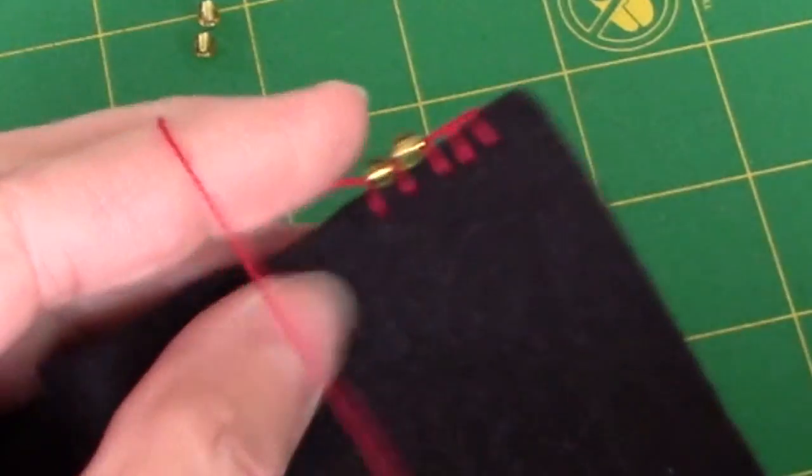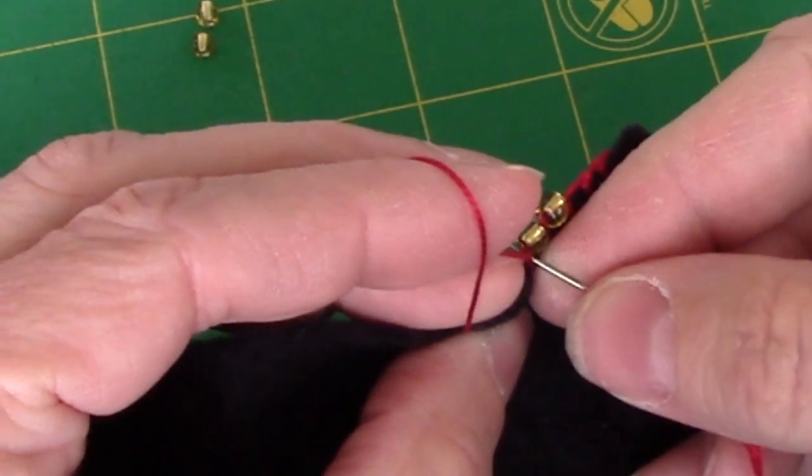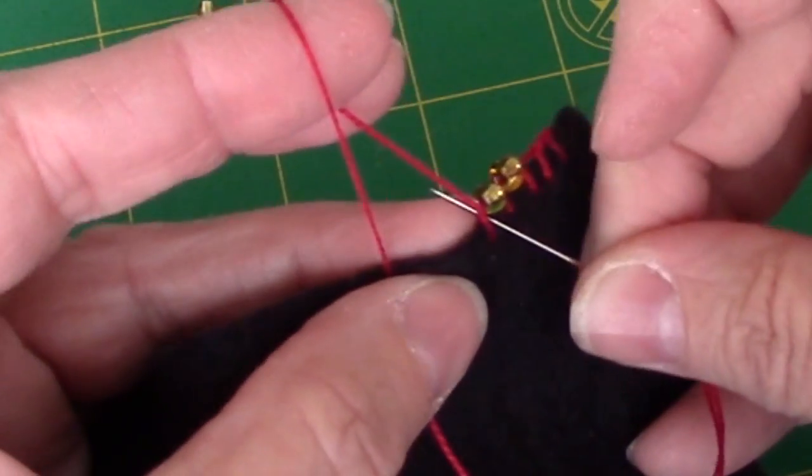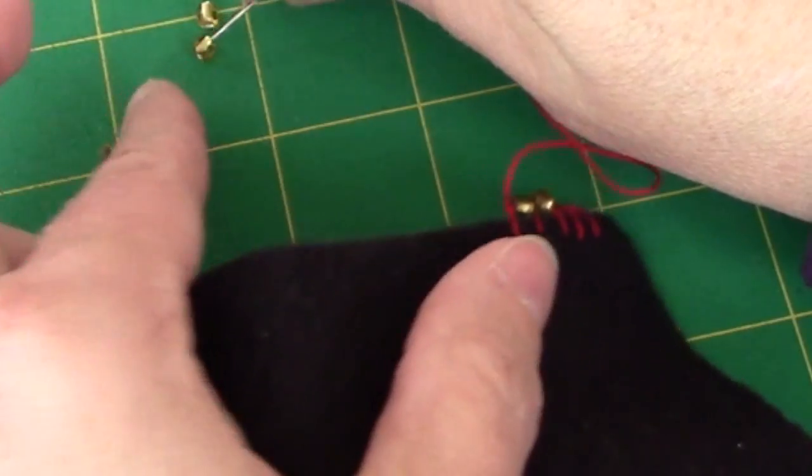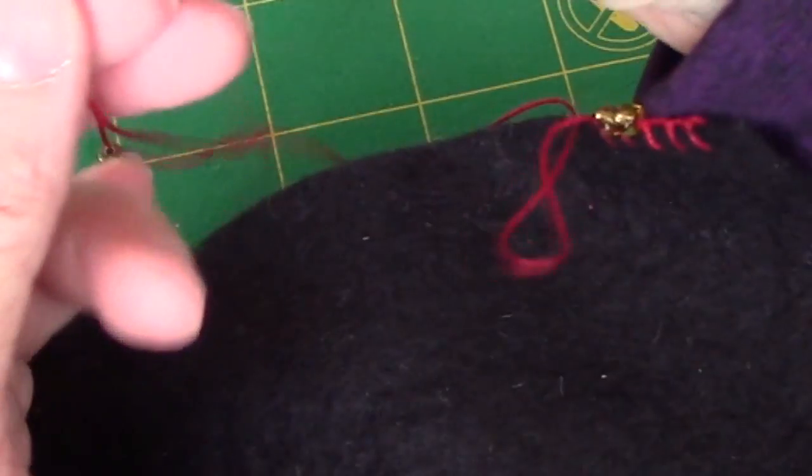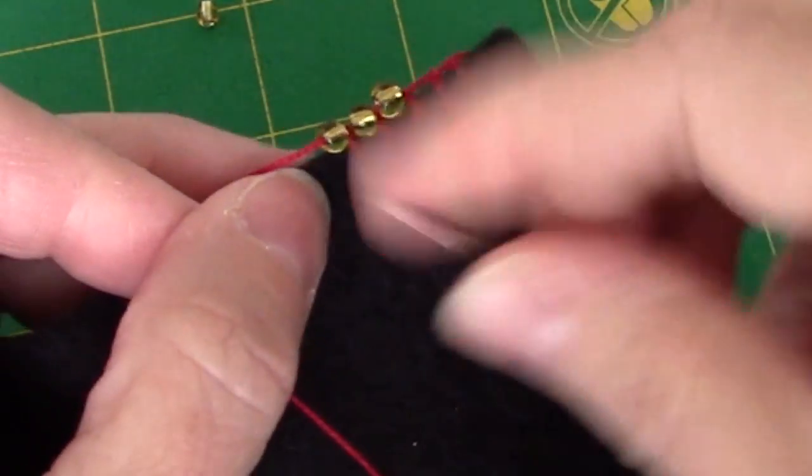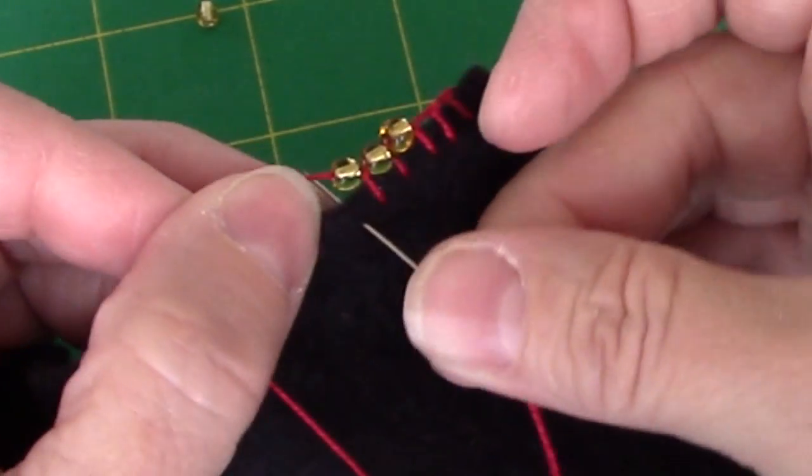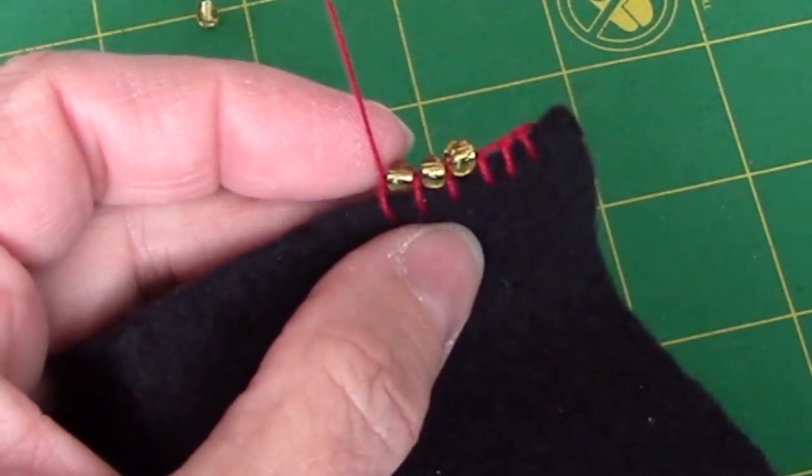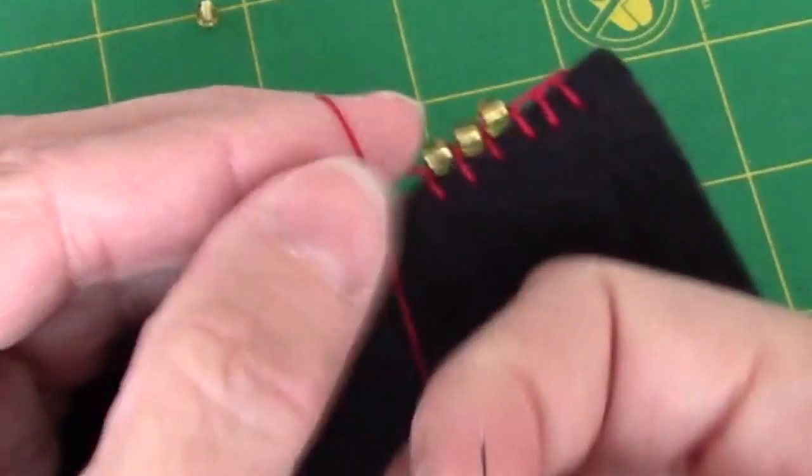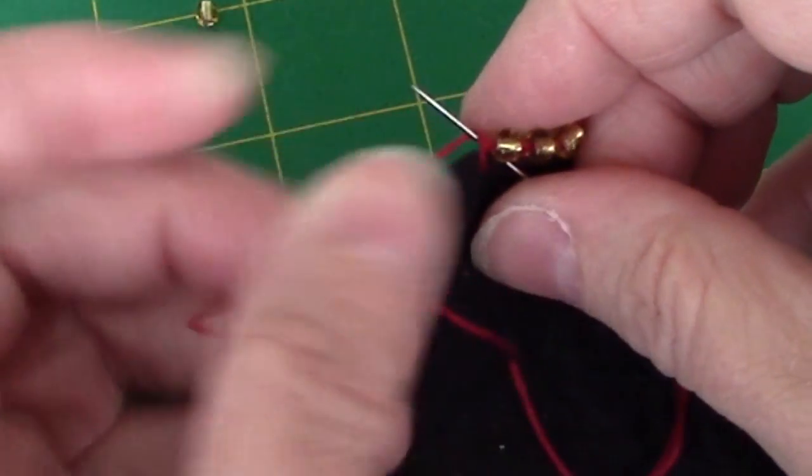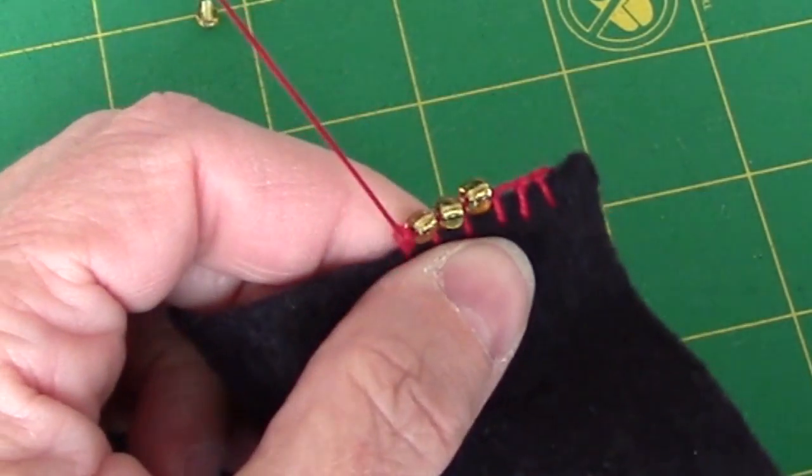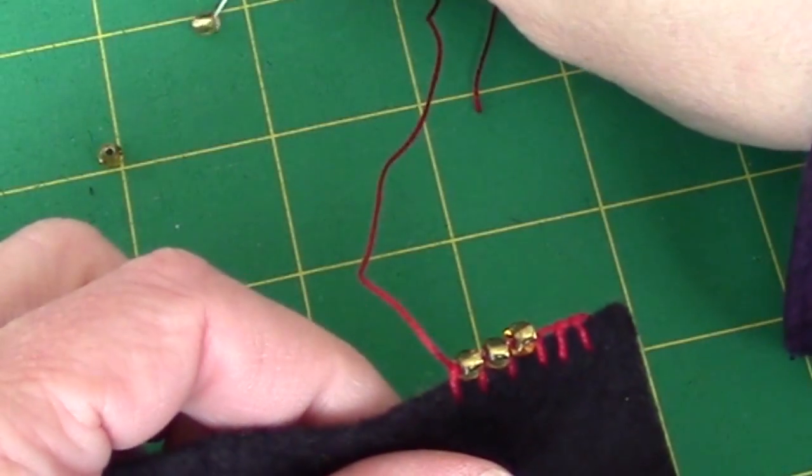And pull through. And then to make the knot, we're going under that horizontal thread, wrapping our working thread under the needle, and pulling through. And then we put another bead on. Straight through, thread under the needle. And then up under our horizontal, working thread under the needle, pull through to get our knot. And then our next bead.